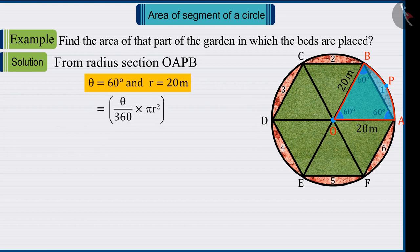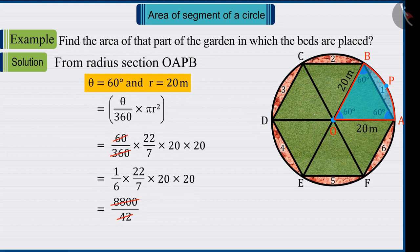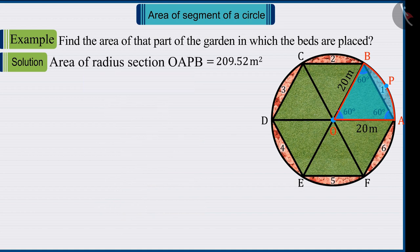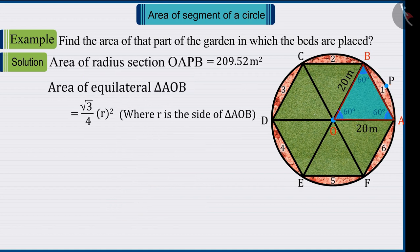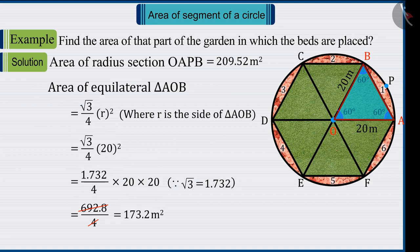In the formula of area of the sector OAB, when values of theta and radius are placed and solved, the value of sector OAPB is found to be 209.52 square meters, while the area of the equilateral triangle putting the value of the sides as 20 gives the value of the triangle AOB is 173.2 square meters.